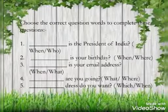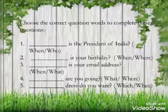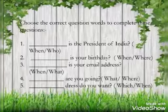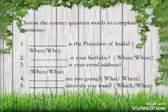Now look at these questions. You have to choose the correct question words to complete these questions. First: dash is the president of India. We are asking about people, so we will use who. Who is the president of India? Second: dash is your birthday. You are asking about time, so you will use when. When is your birthday? In this way you will choose the correct question words.